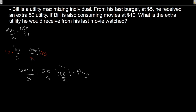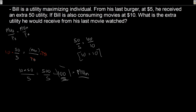Bill got an extra 50 satisfaction from his last burger and an extra 100 satisfaction from his last movie, but satisfaction per dollar is equated: 50 over 5 equals 100 over 10. Both break down to 10 satisfaction per dollar. So we are utility maximizing, and Bill is happy.